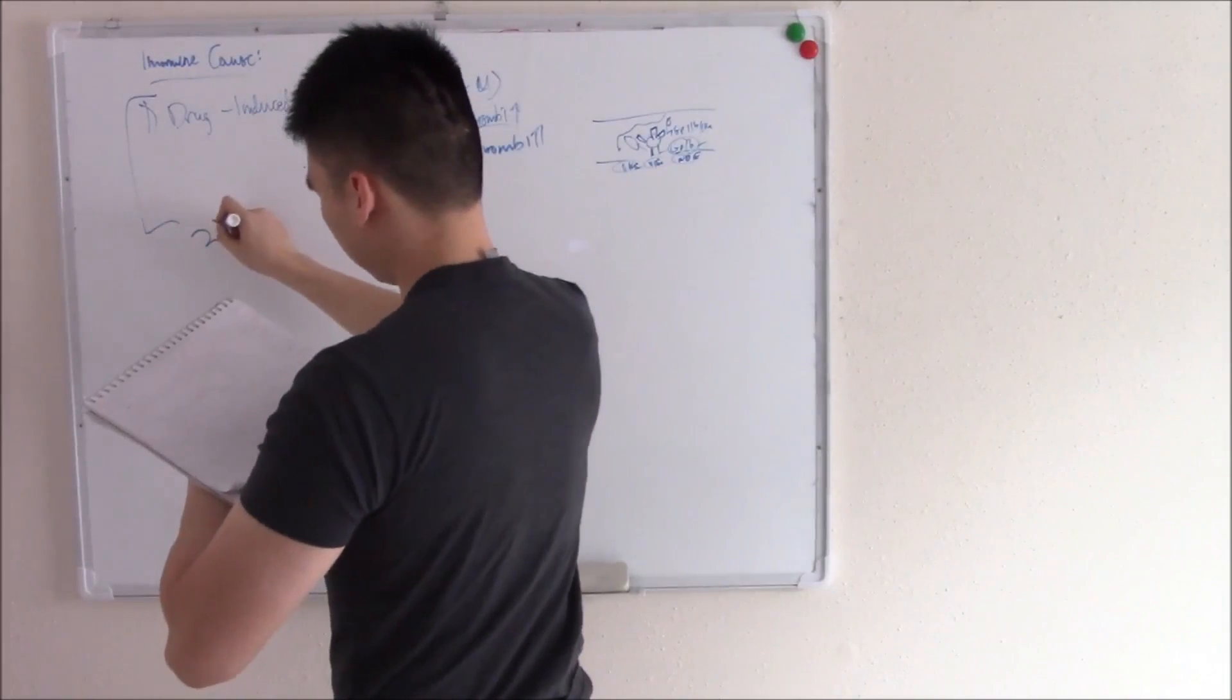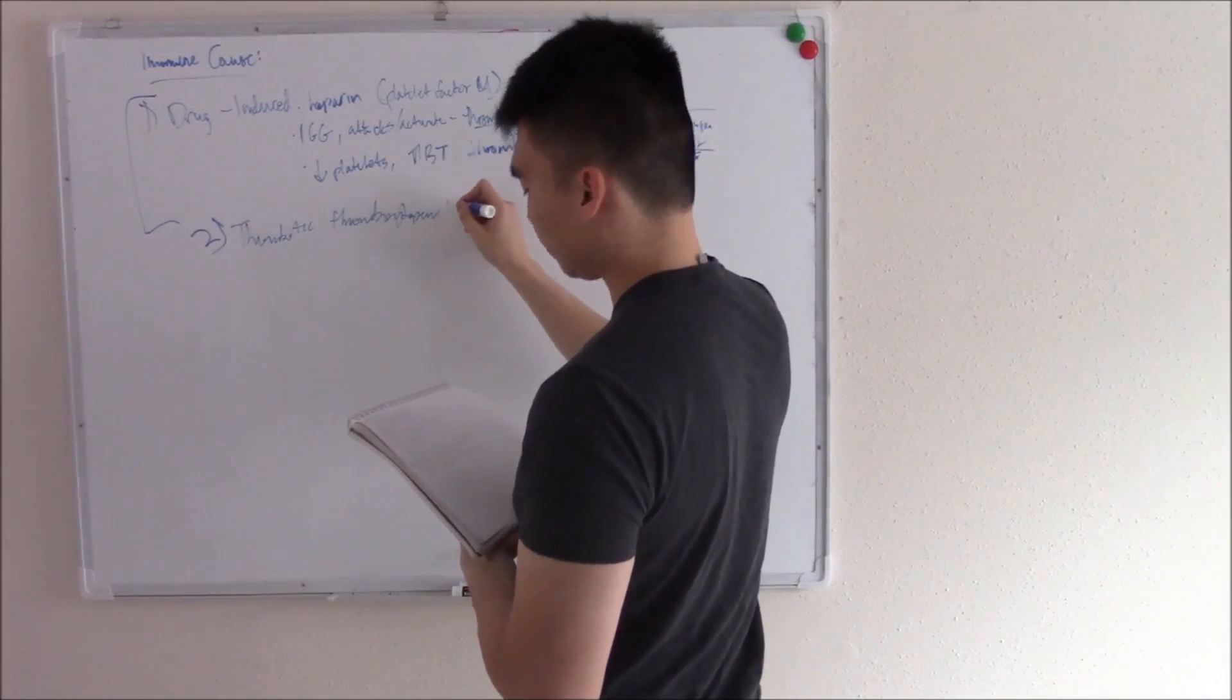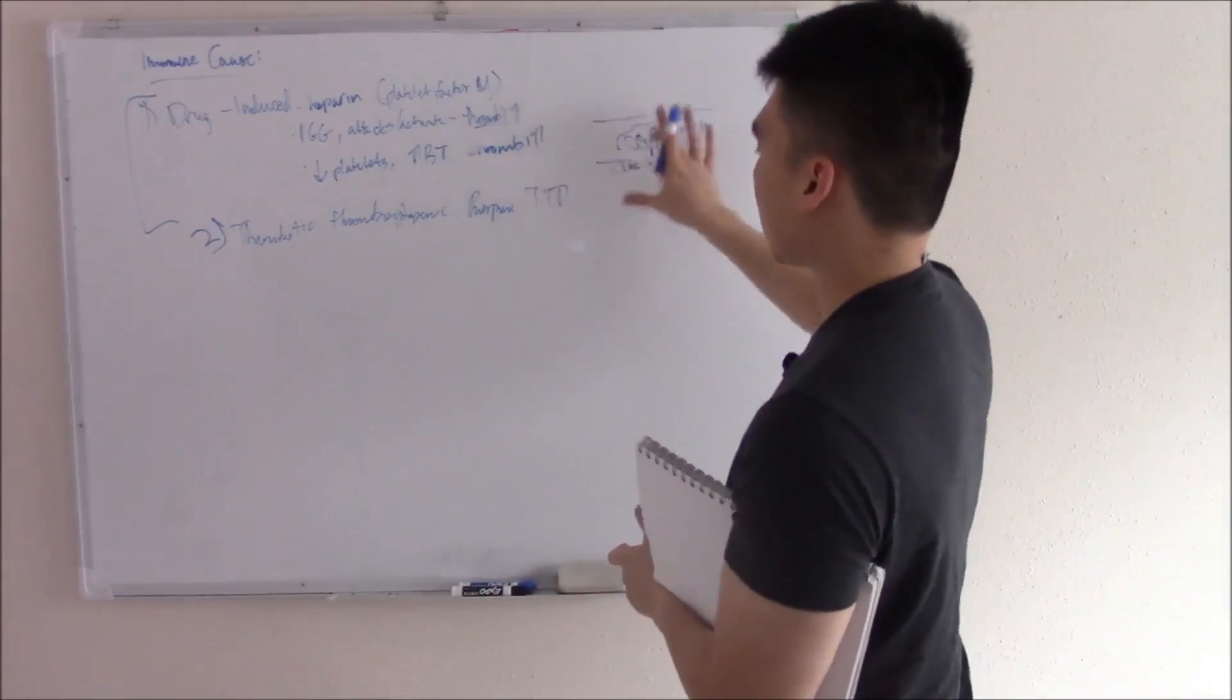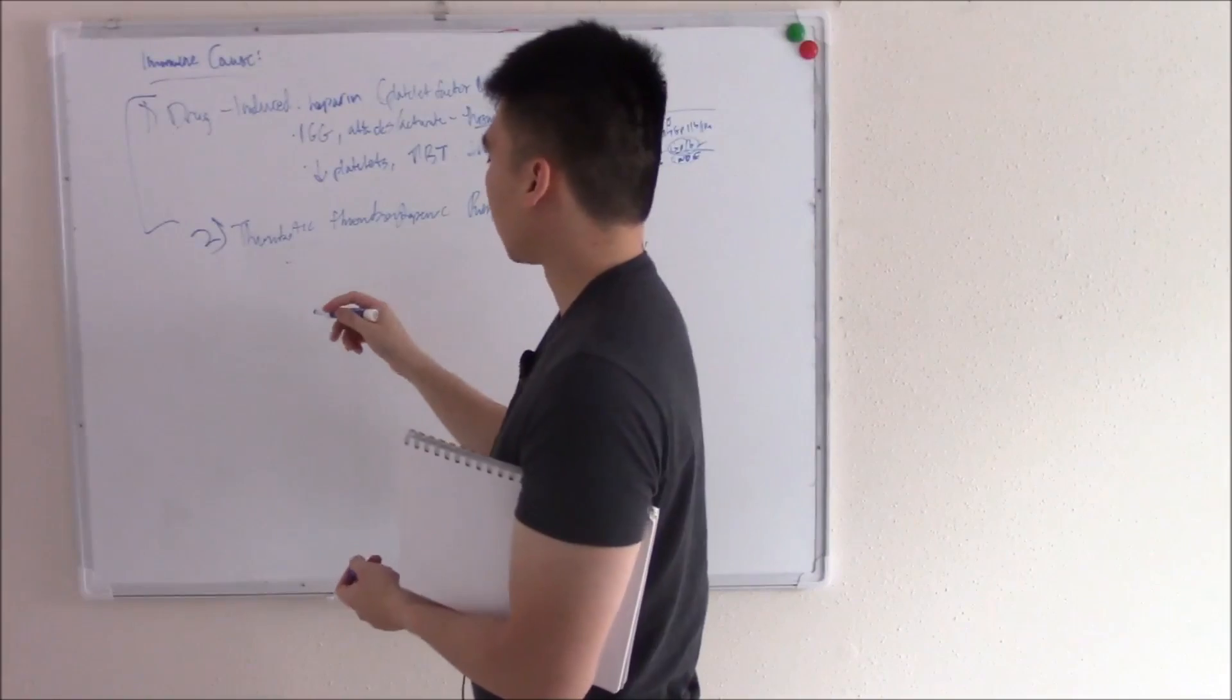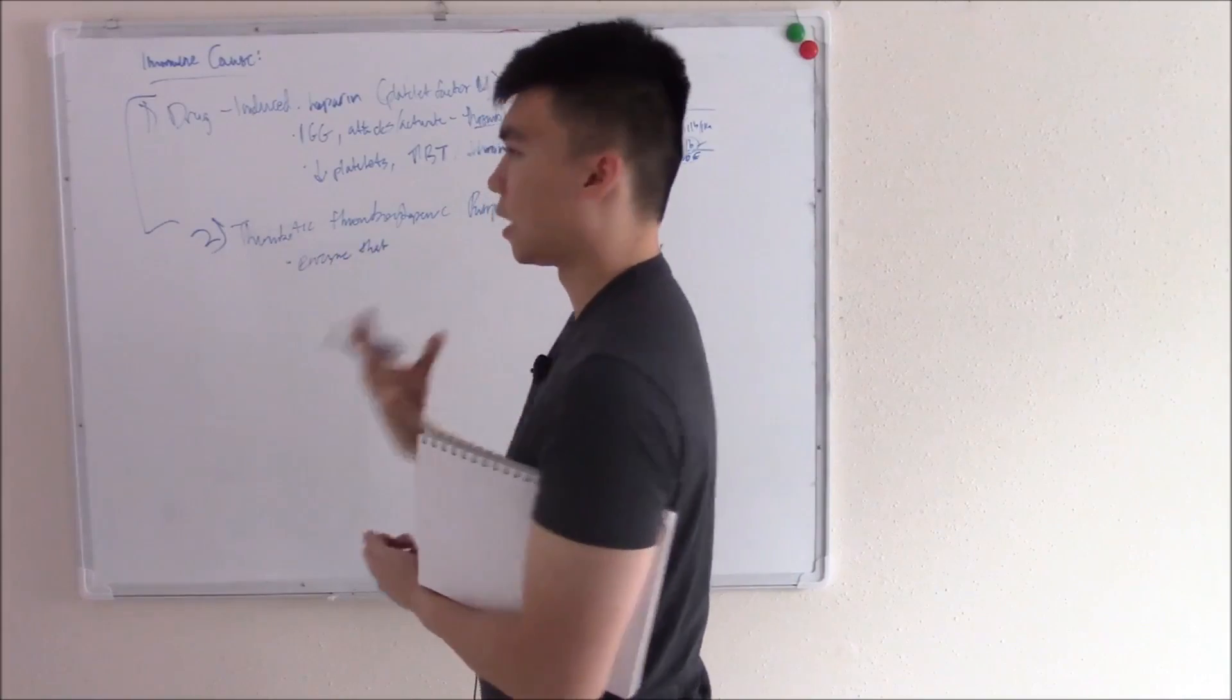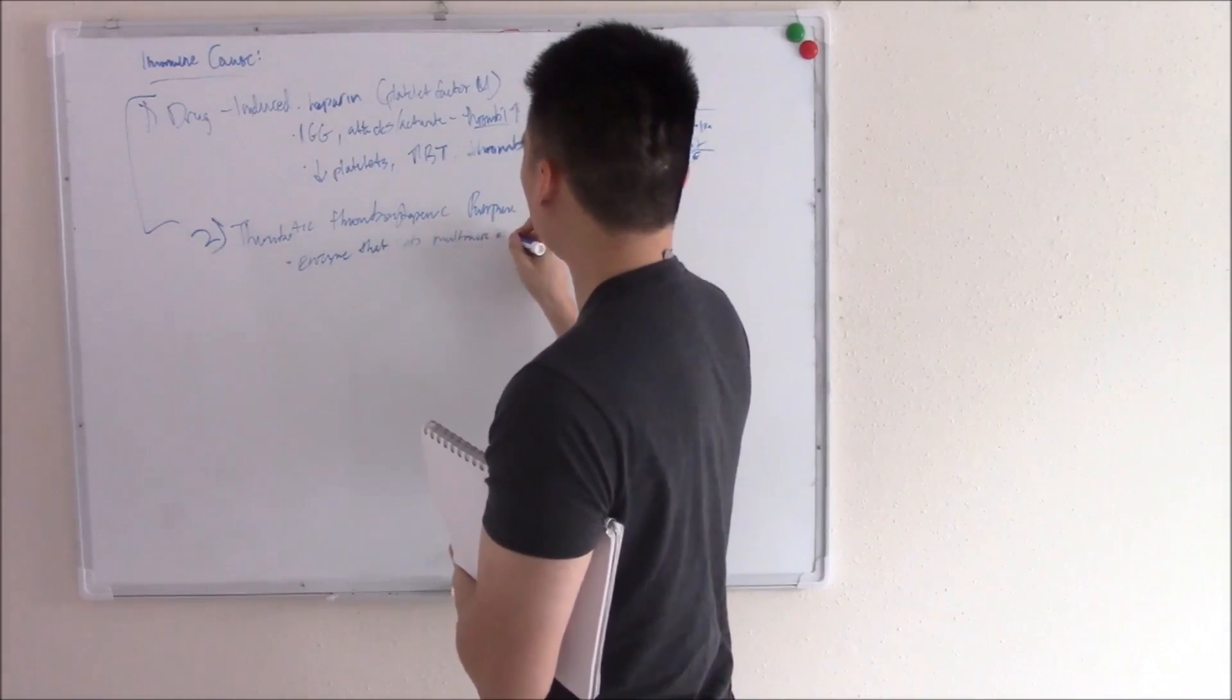The second one I want to talk about is going to be thrombotic thrombocytopenic purpura or TTP. As much as we need von Willebrand factor for everything, we don't want to have too much. Otherwise, we'll have inappropriate thrombi. And so there's an enzyme, a metalloproteinase. They call it metallo because it contains zinc. An enzyme that cuts up aggregates of von Willebrand factor or multimers of von Willebrand factor.